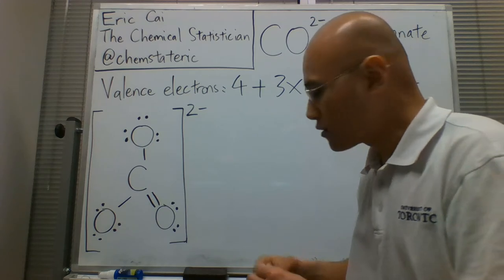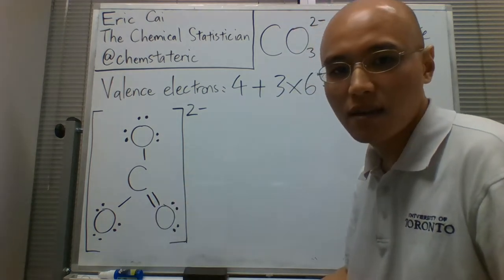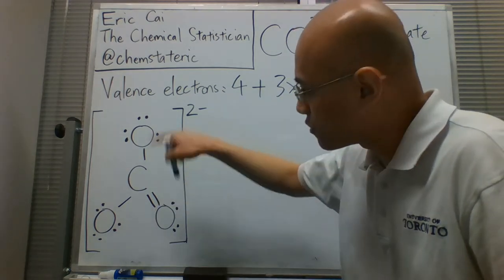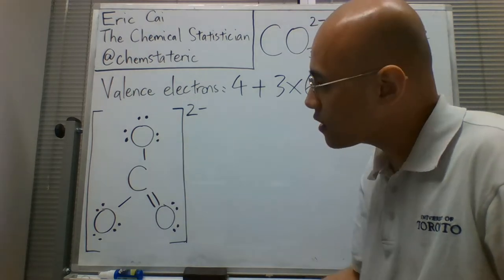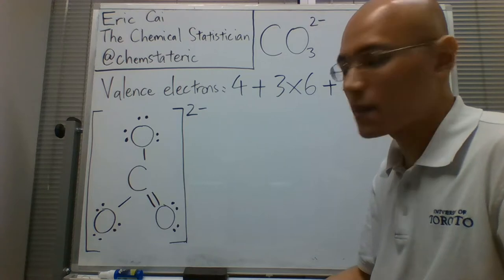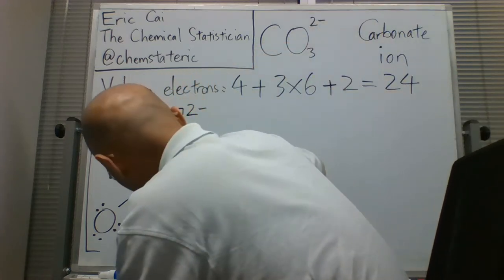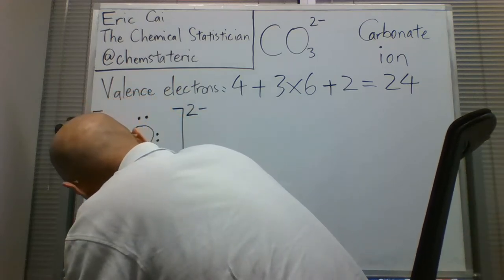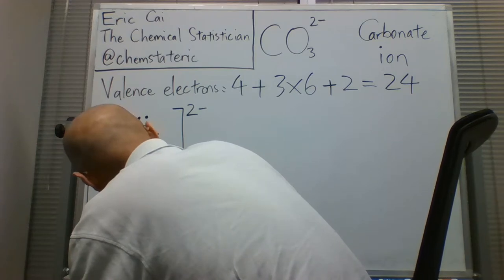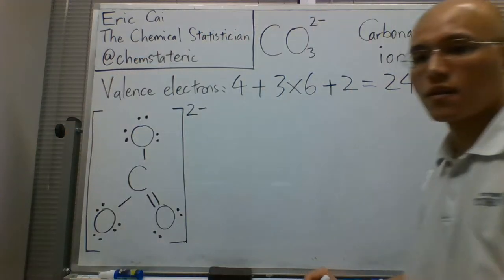So now, the carbon has a stable octet, and we still have those 24 valence electrons distributed throughout this polyatomic ion. And I'm just going to redraw these electrons so that they are as far apart from each other as possible.